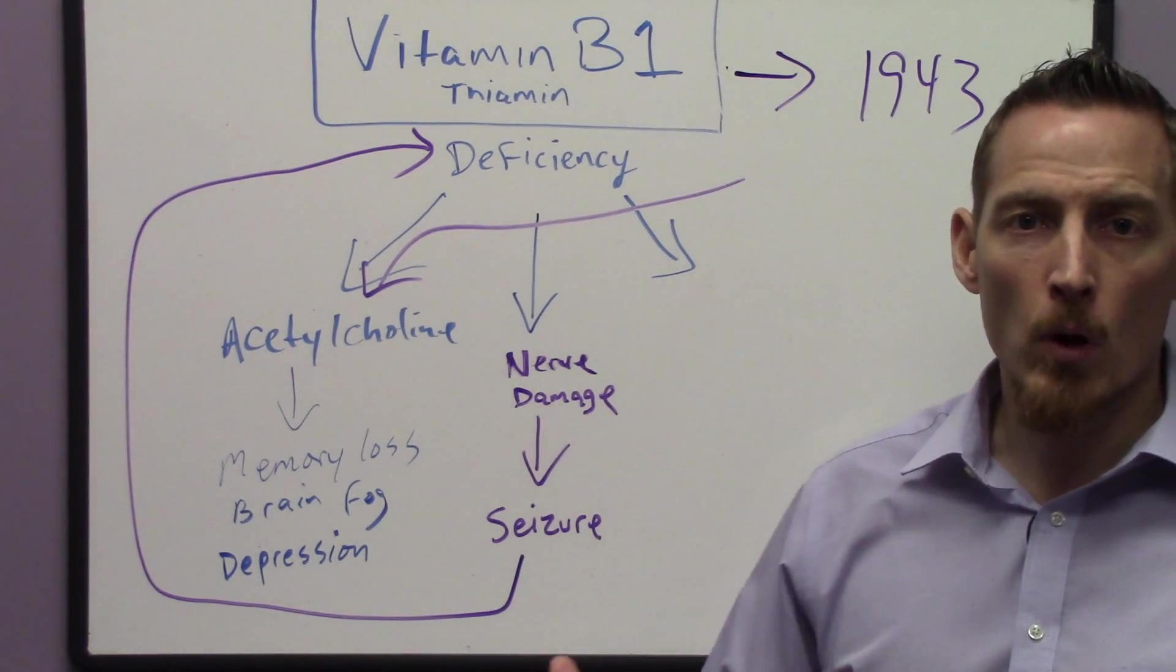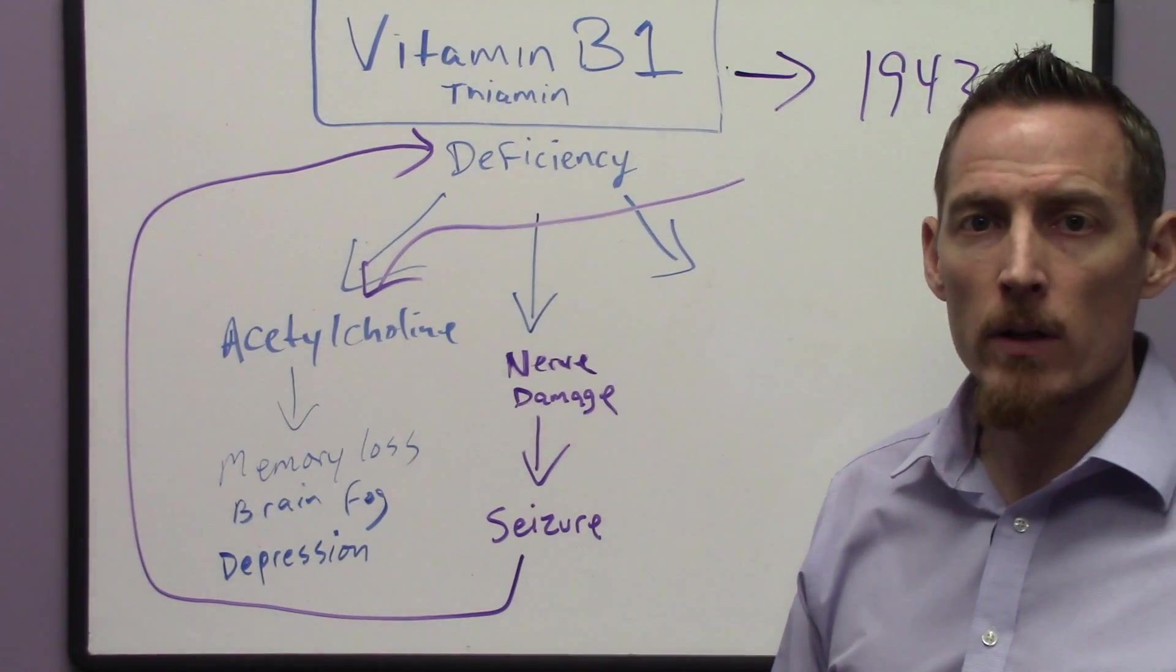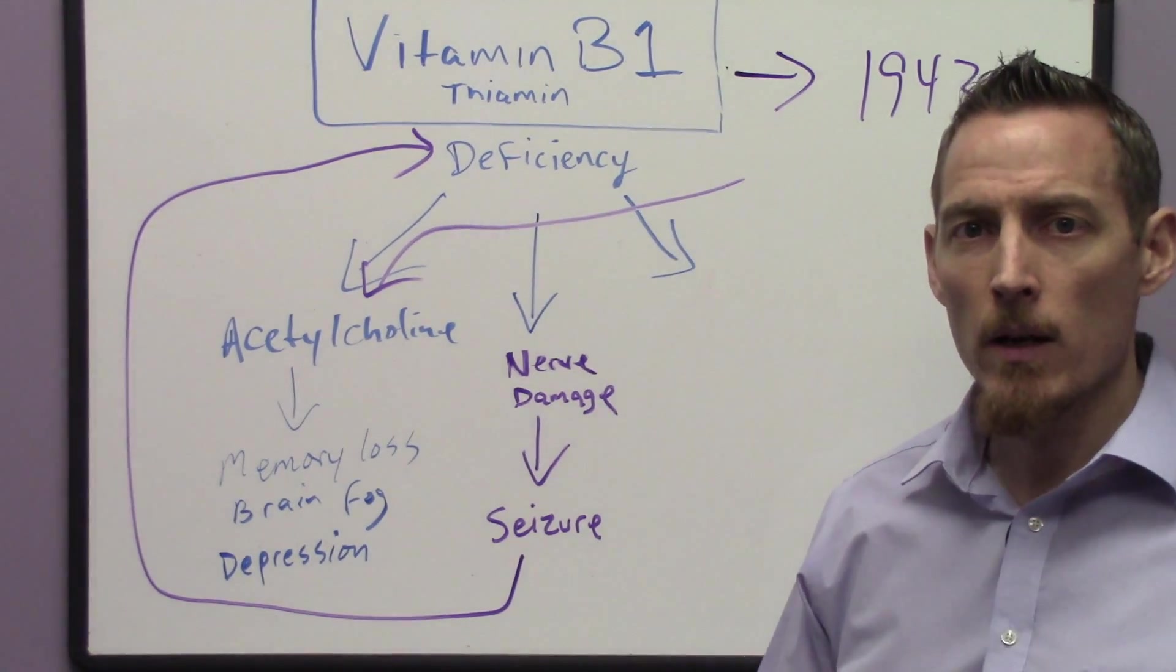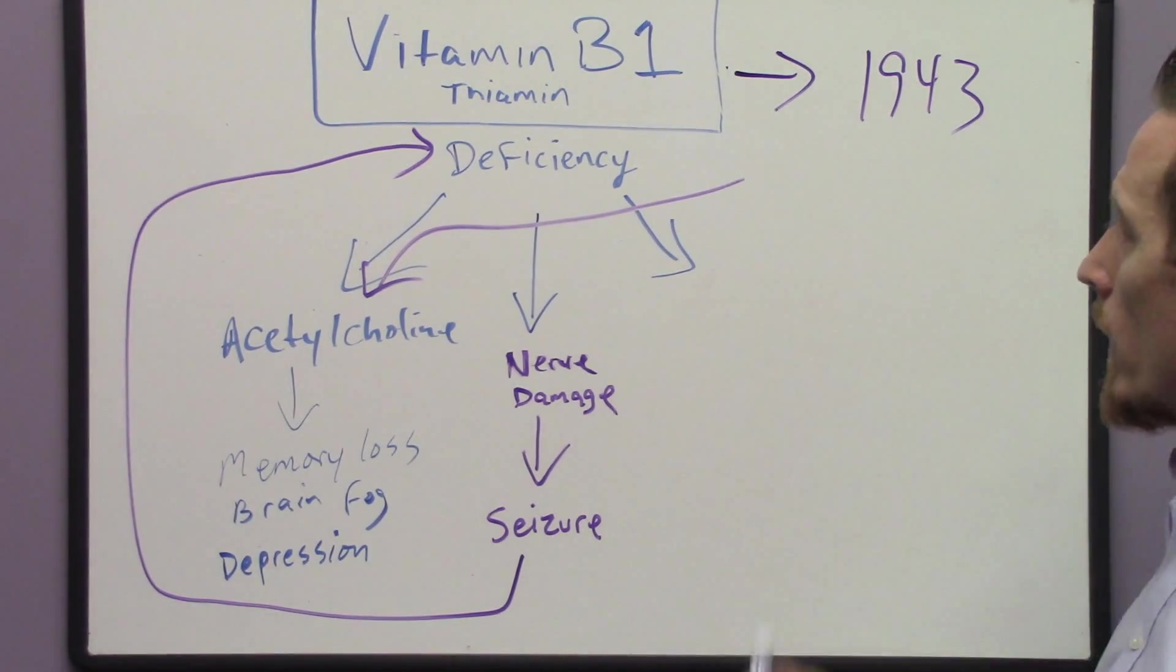In essence, when you processed grain and you made breads and you made other things out of it, it actually didn't contain adequate quantities of vitamin B1. And so what happened was widespread beriberi occurred in the population. And so in 1943, the US government said,